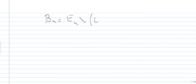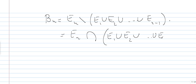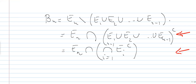From what we said, this is E_n minus E1 union E2 union E_{n-1}. So this is equal to E_n intersects the complement of E1 union E2 union E_{n-1}, and if we use the properties of De Morgan, this is just the intersection of all the E_i's complement from 1 to n minus 1.